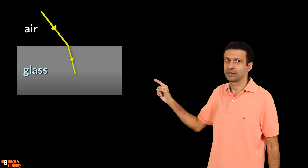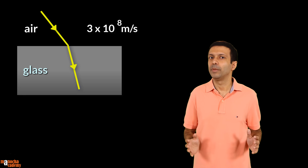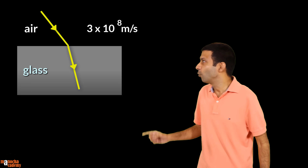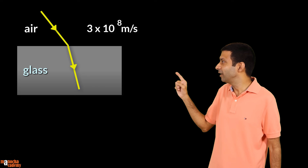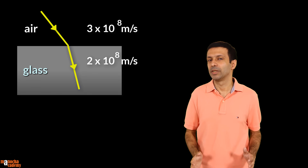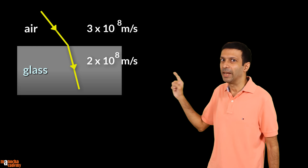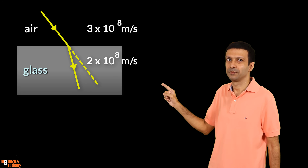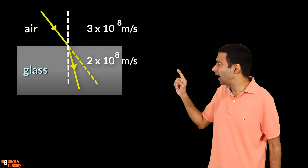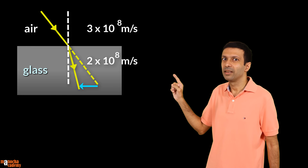Let's start with a ray diagram for light traveling from air to glass. Light is traveling in air at a speed of 3 × 10⁸ meter per second. Now when light hits the glass its speed slows down. The speed in glass is 2 × 10⁸ meter per second. So you can see that due to the change in speed the light bends — it changes its direction from its original path. If we draw a normal at the point of incidence, the light bends towards the normal in the glass.